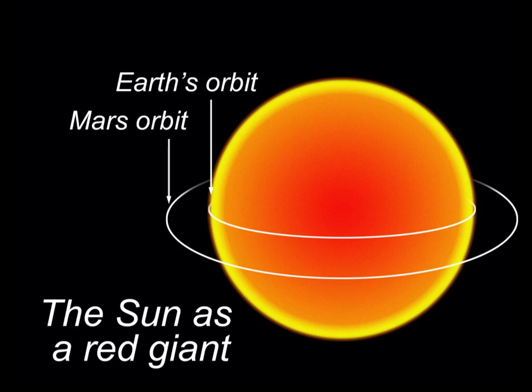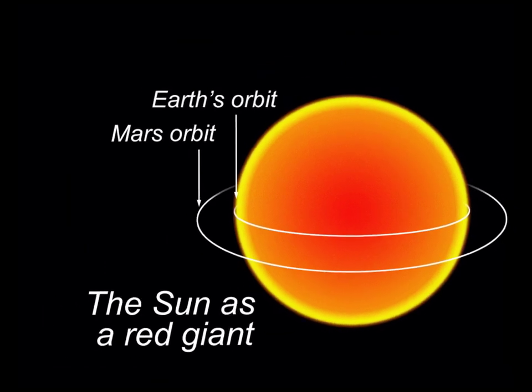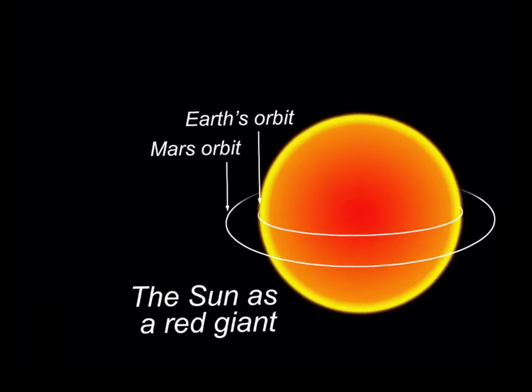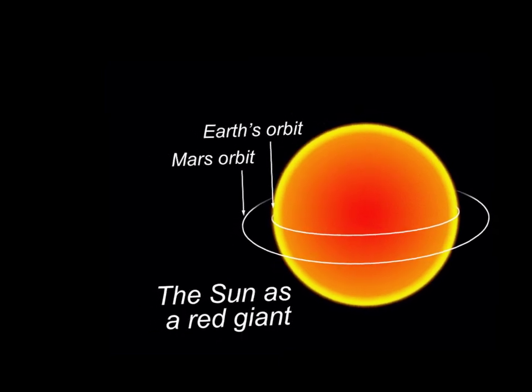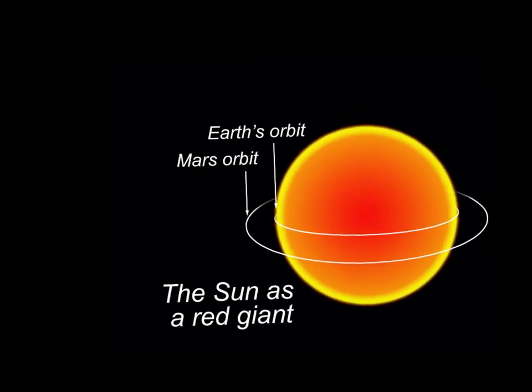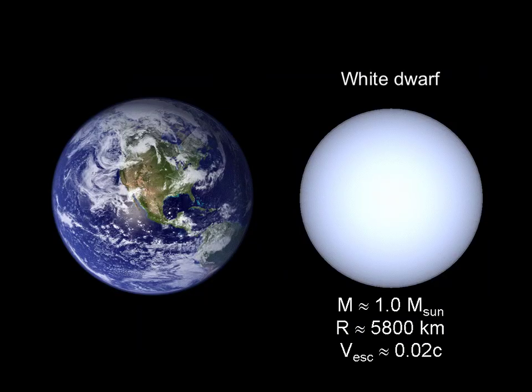Eventually, all that helium in the core is going to be used up, and fusion will stop again. This will cause the entire Sun to start shrinking again, heating up the core thanks to increased friction. However, for the Sun, it's never going to reach temperatures in the core great enough to allow the fusion of heavier elements. As a result, our star will then go on to the next stage in its life: a white dwarf. A white dwarf is technically not a star by the definition of having nuclear fusion reactions going on in the core.